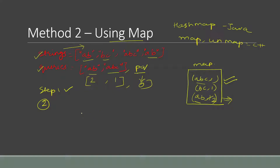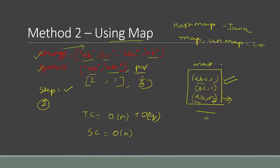The time complexity will be O(N) for traversing the strings array to build the hash map, plus O(Q) to traverse the queries array. The space complexity will be O(N) because we are creating a hash map of size N — at most there can be N unique strings. If we use C++, we use unordered_map and the average time complexity of unordered_map operations is O(1).